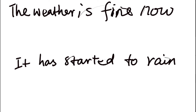了 has two very important functions. One is to indicate that a new situation has come. For example: the weather is fine now — 天晴了. It means the weather was not so fine before, but it becomes quite fine now.